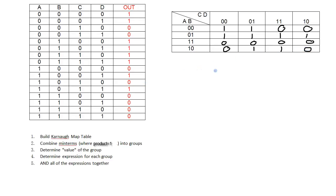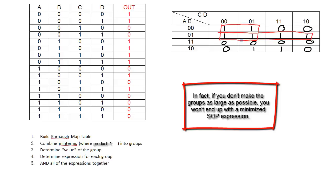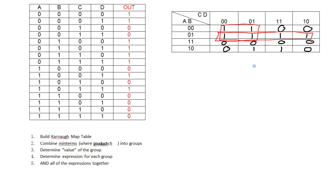Step two is to combine all minterms where the output equals 1 into groups, making them as large as possible with size a power of 2. There's a group of 4 here that I can't make any bigger. Then there's a group of 2, but by overlapping I can make it a group of 4 — it's much better to use the largest group possible. There's a third group of 2, which also overlaps with the adjacent box, but the remaining box can't be added since that would make a group of 3.